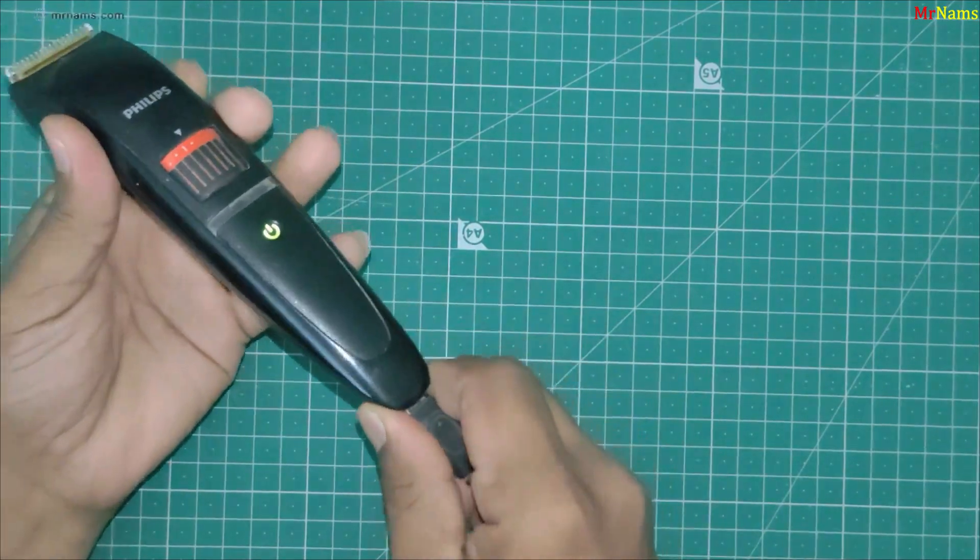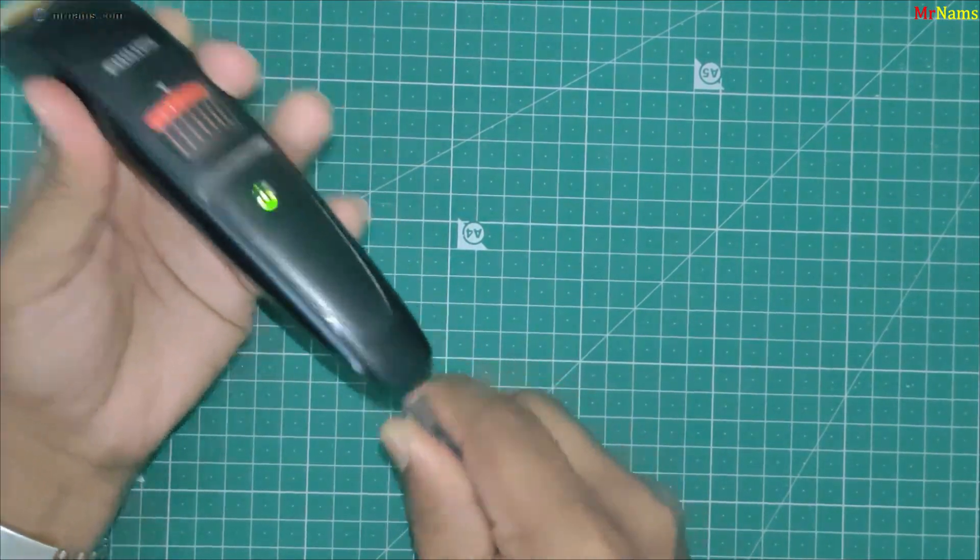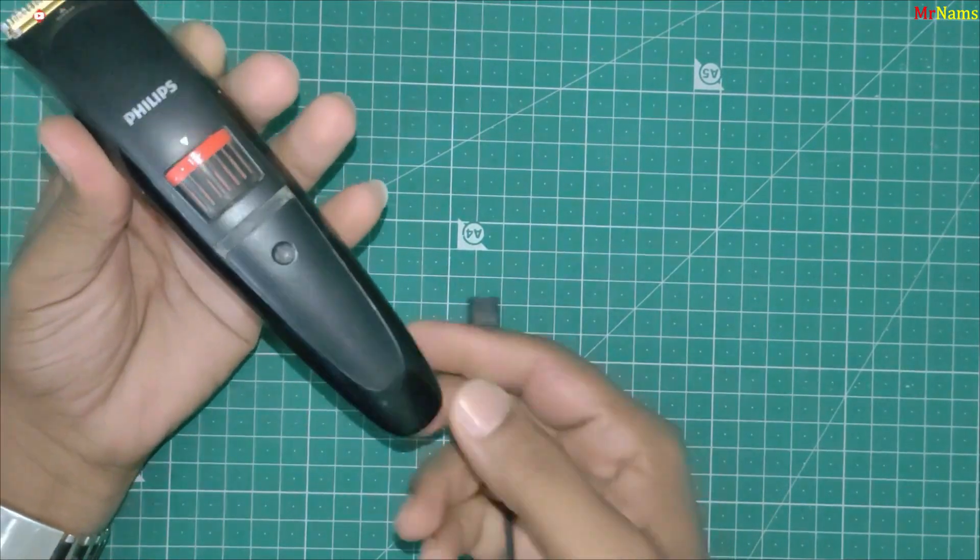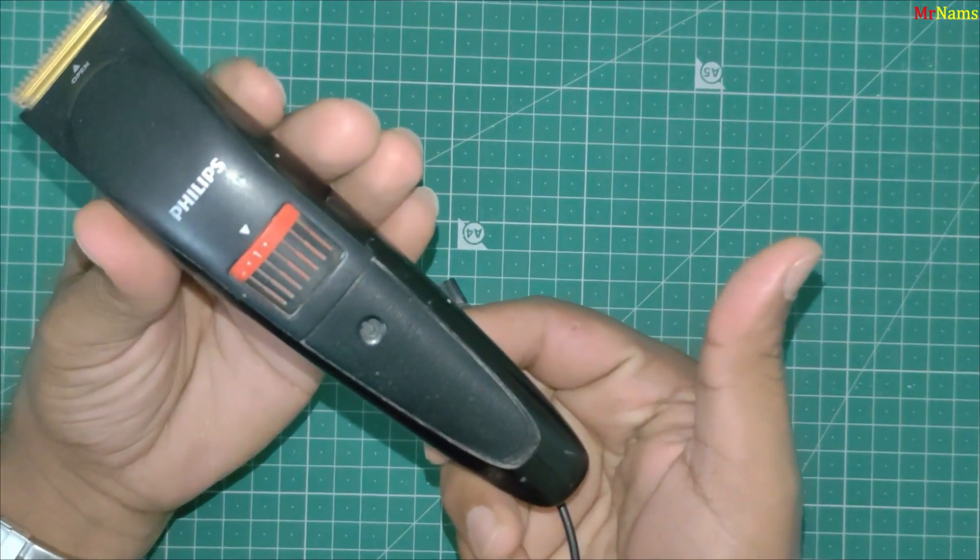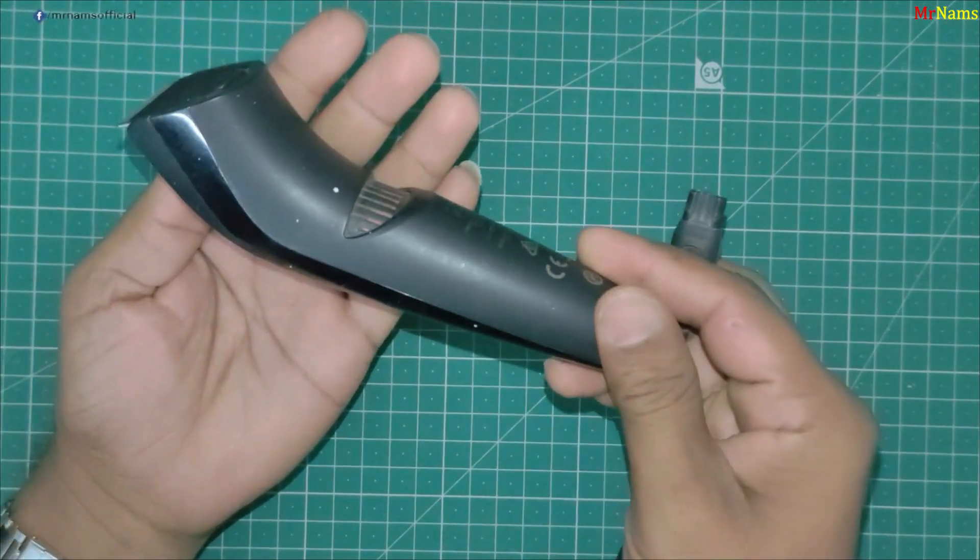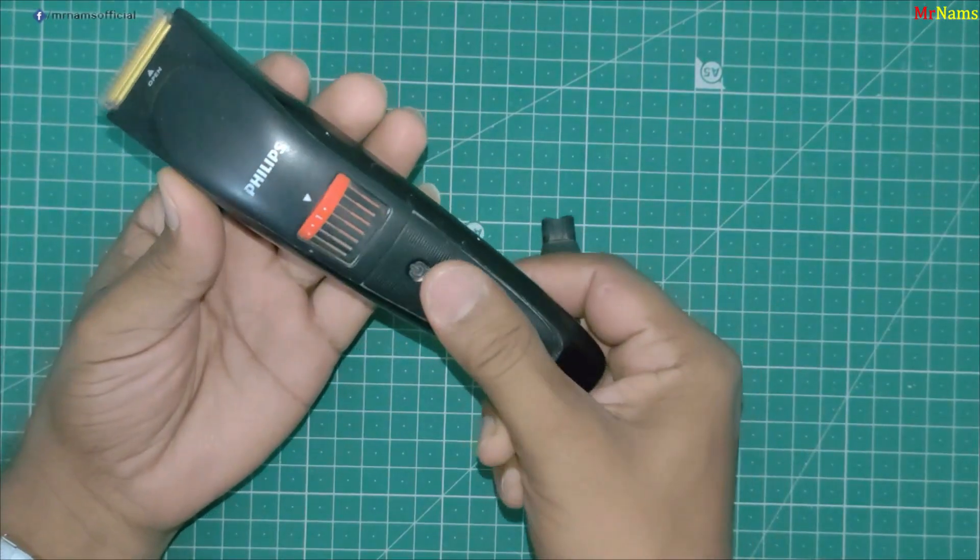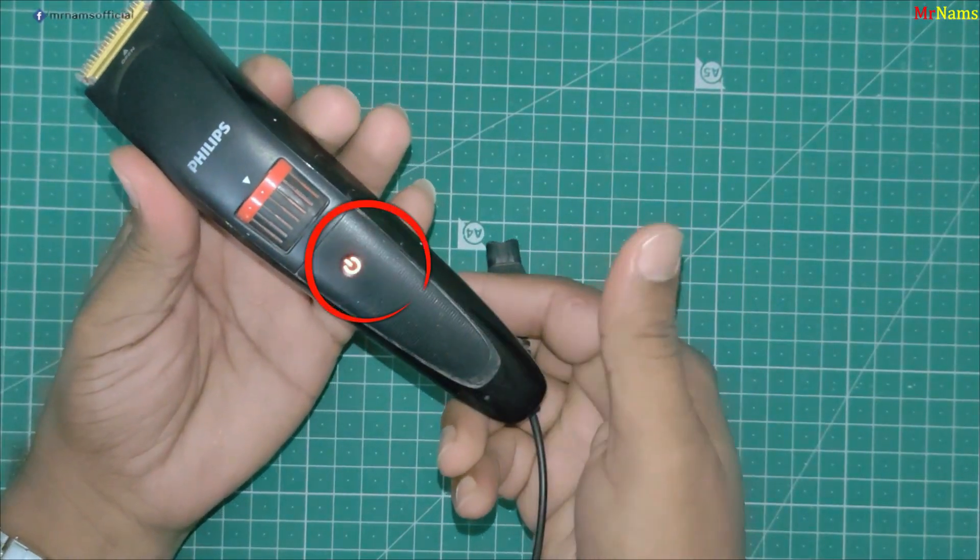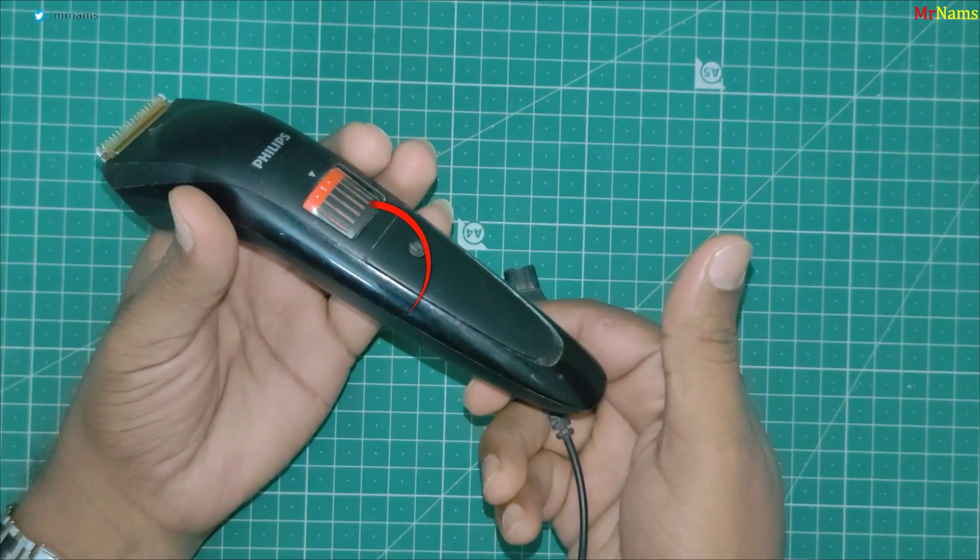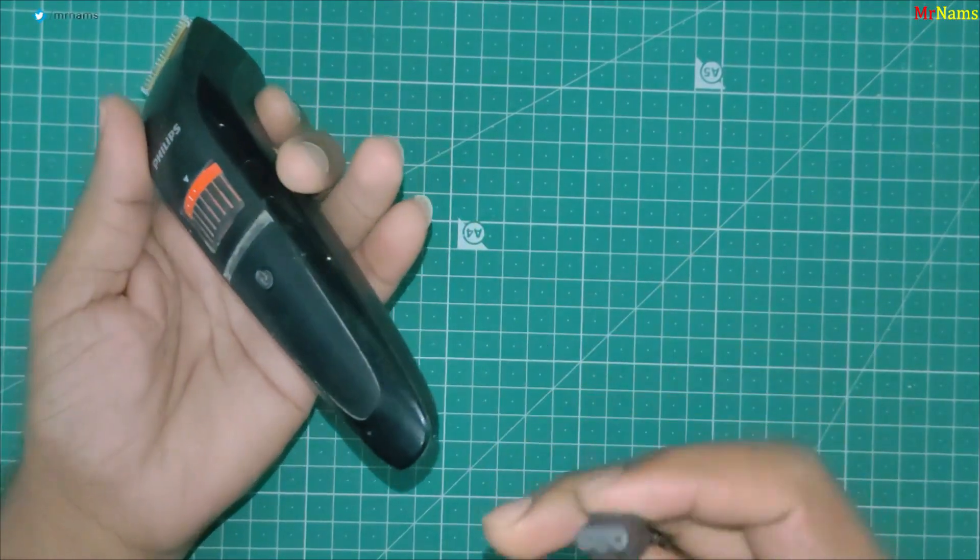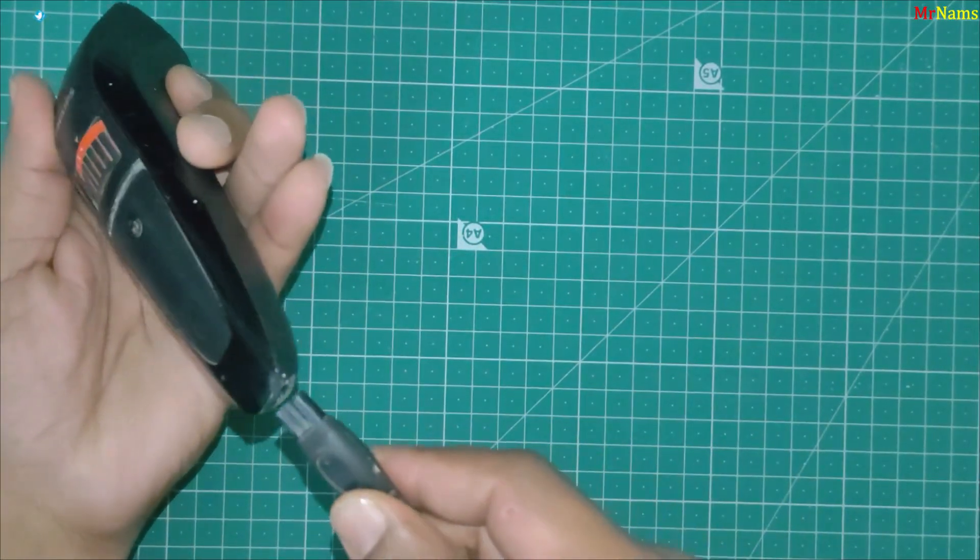Step 1. Identify the problem. When unplugged, the trimmer's motor slows down and stops after a short time. The charging indicator shows that the battery is completely discharged. This confirms that the rechargeable batteries are faulty and need replacement.